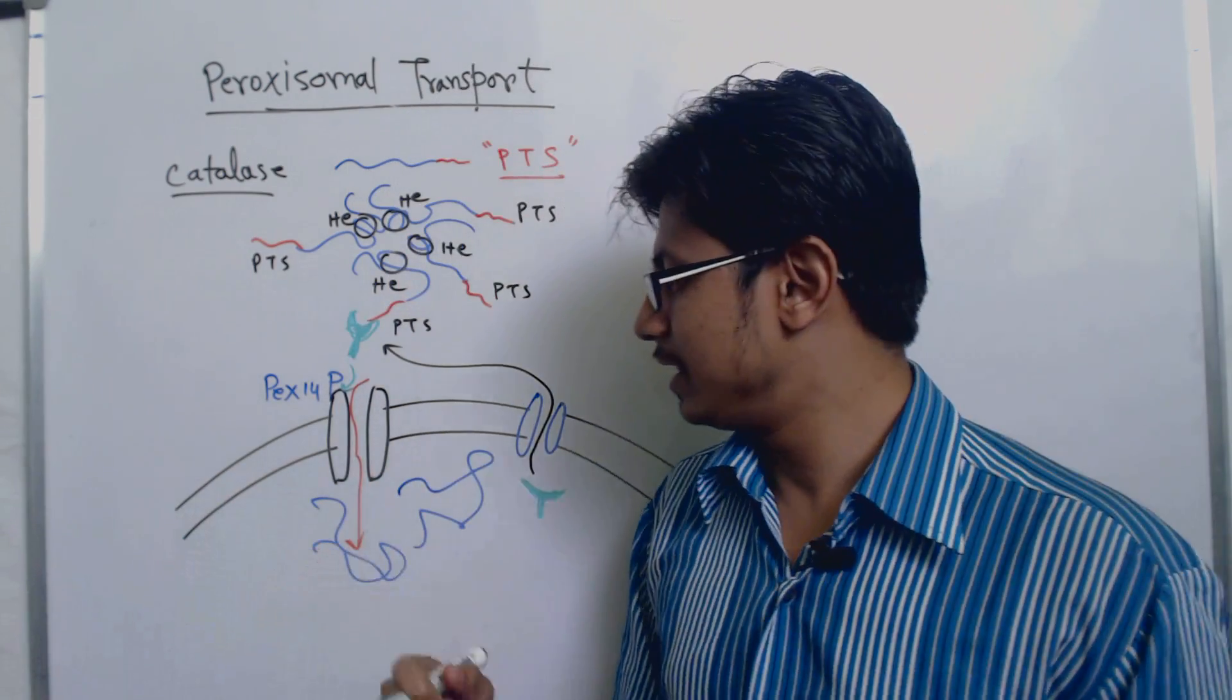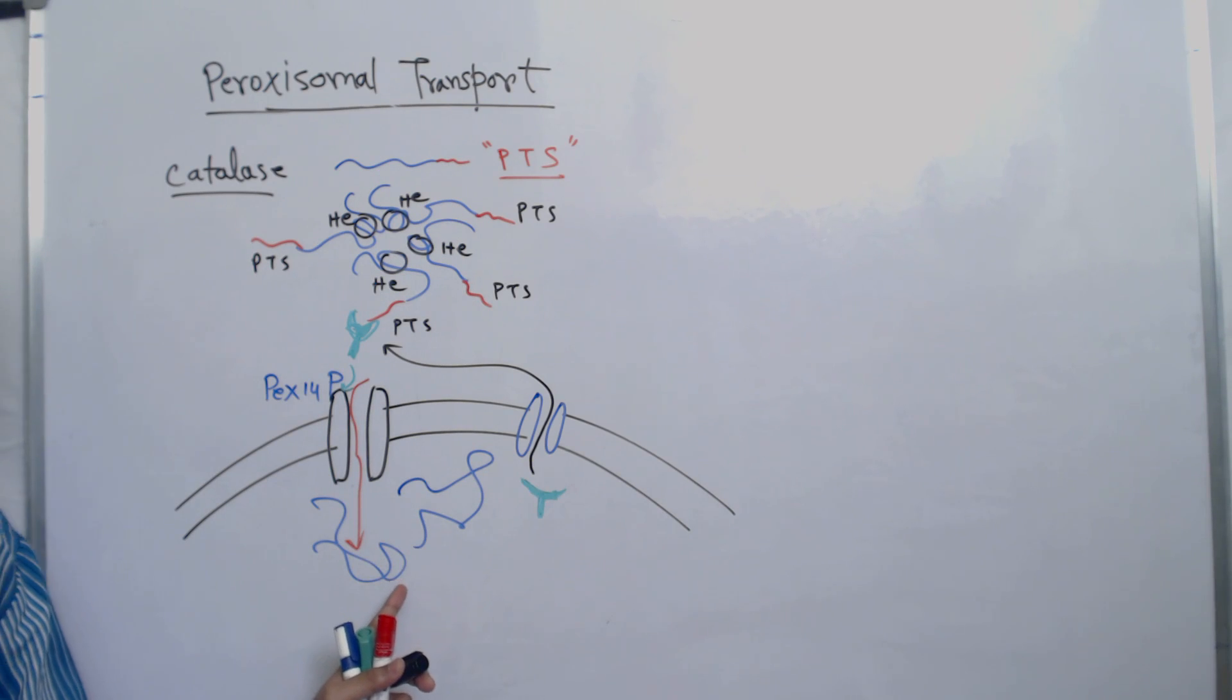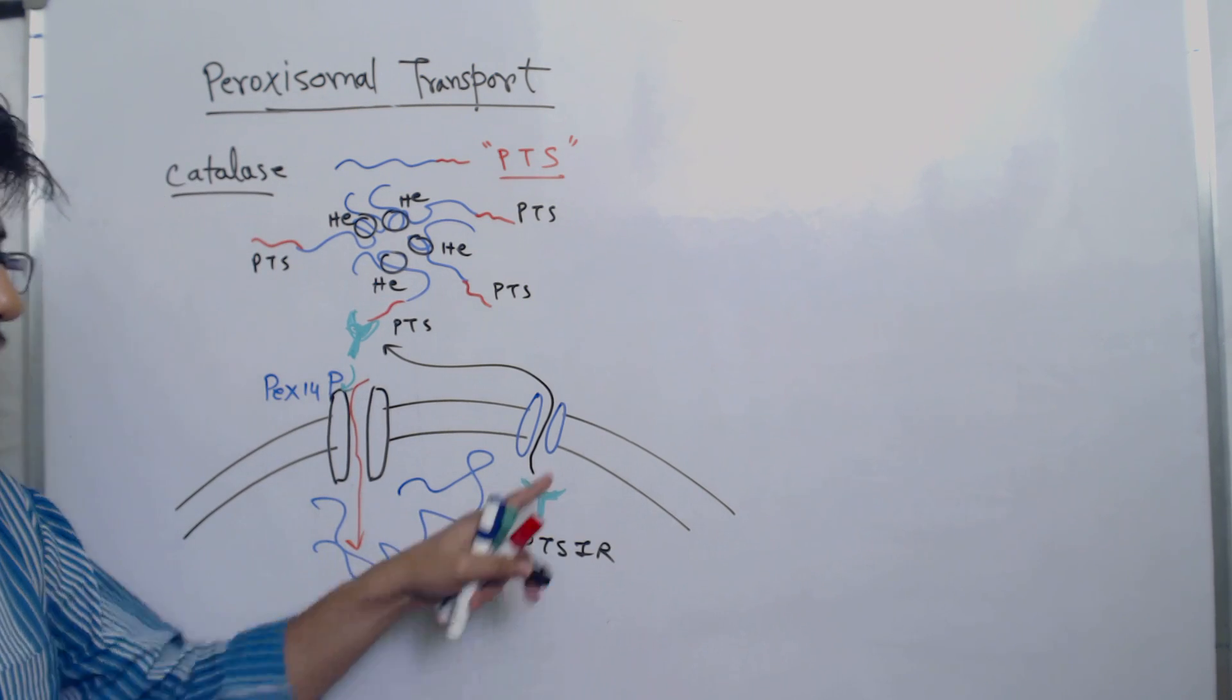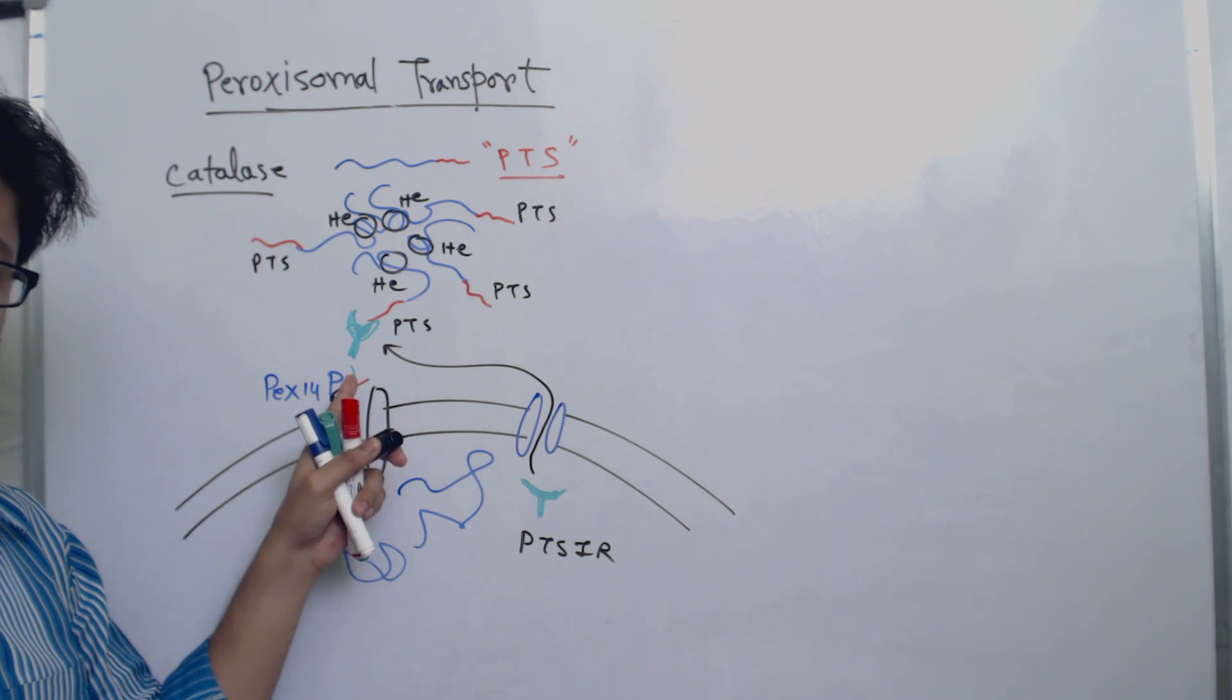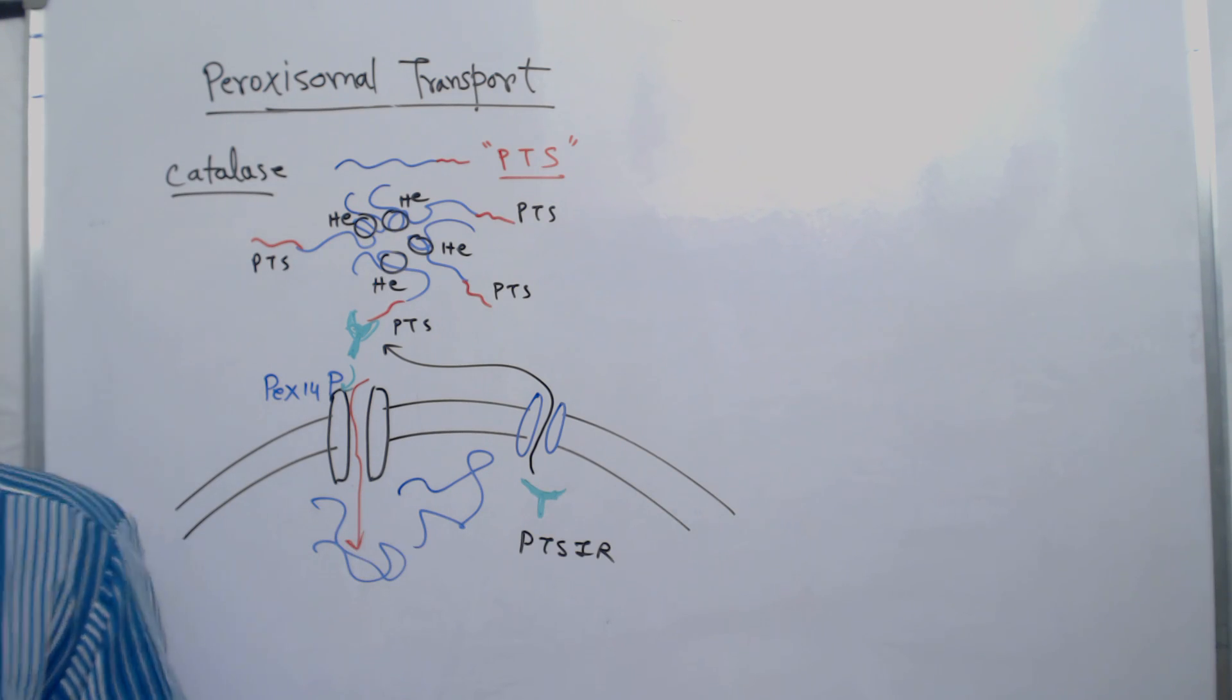These are the sequential processes that keep occurring: transporting a protein inside, removal of the PTS1R, and then cycling this PTS1R so it can bind with the next round of polypeptides.